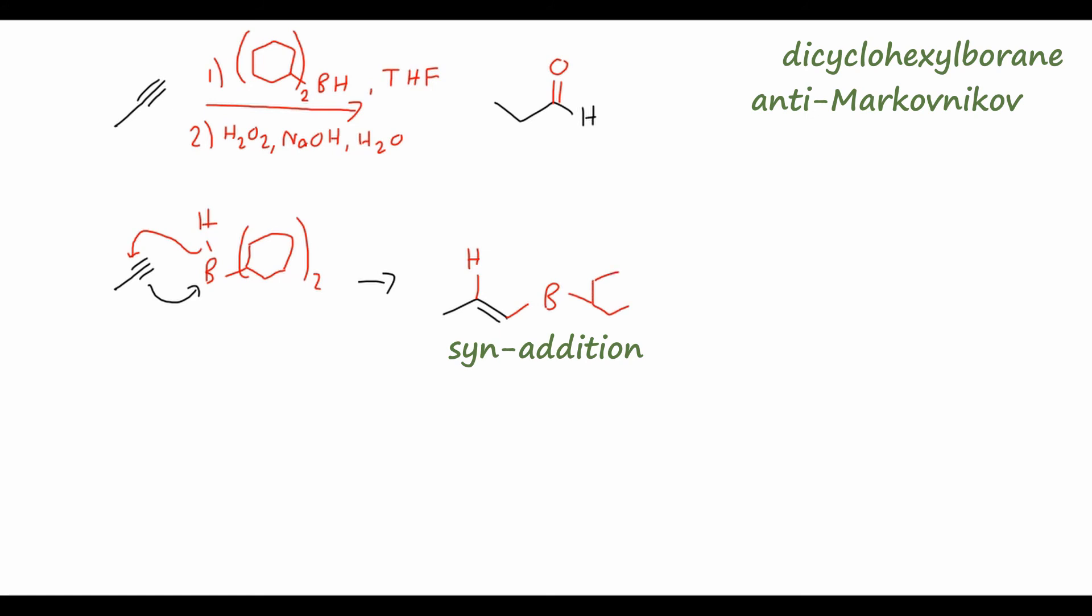Then, just as in the alkenes video, we will have the hydroperoxyl anion, formed from hydrogen peroxide and sodium hydroxide, come in to attack the boron center, because the hydroperoxide anion is a very good nucleophile, to form this intermediate where we have now the boron with a negative formal charge.